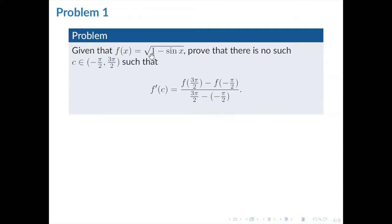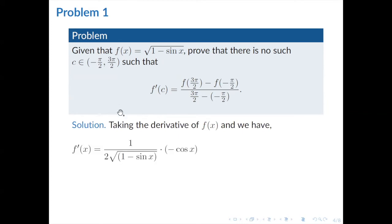Problem one: given f equals the square root of 1 minus sine of x, prove that there is no c within the interval from negative pi over 2 to 3 pi over 2 such that this equality holds. So we start by taking the derivative of f. Applying the chain rule, we obtain the derivative and then simplify it.